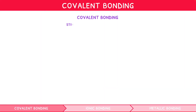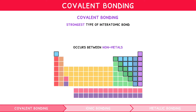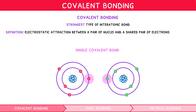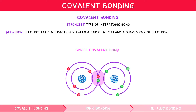Covalent bonding is the strongest type of interatomic bond, and occurs between nonmetals. It is defined as the electrostatic attraction between a pair of nuclei and their shared pair of electrons. During a single covalent bond, the two atomic orbitals involved, each containing one electron, overlap so that the electrons are paired in what is known as a molecular orbital. The remaining pairs of electrons are left in the valence shell of the atoms involved and become known as lone pairs.